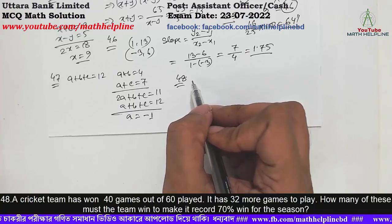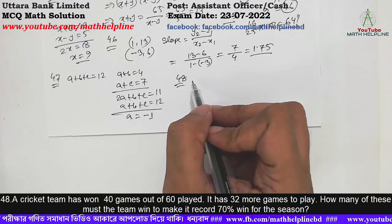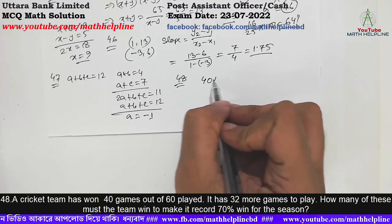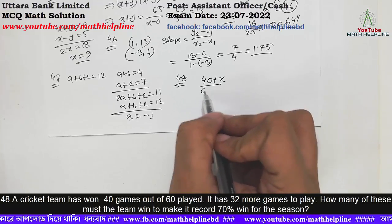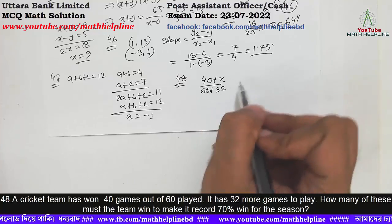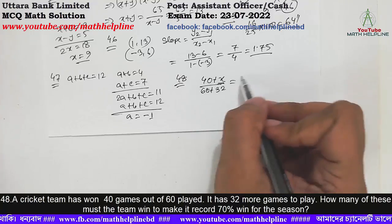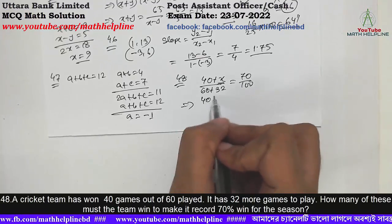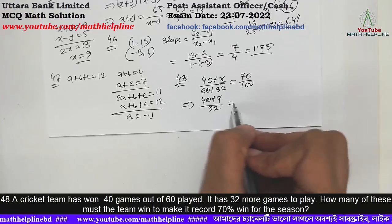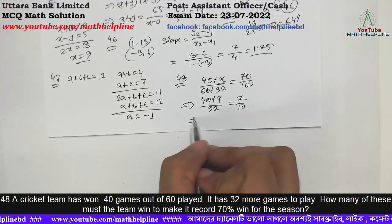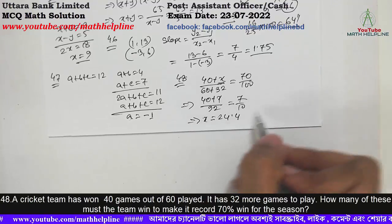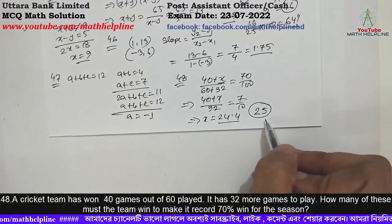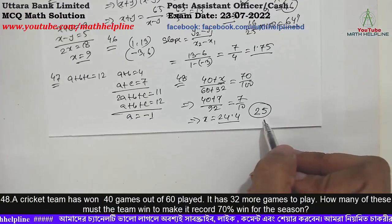A team played games; out of earlier games 19 were won with a 70% win rate. After playing x more games, the total wins over total 60 games equals 70%. Calculation: 40 plus x divided by total equals 7 by 10. Solving gives x equals 24.4, so they must win 25 games. That is the answer to this problem.